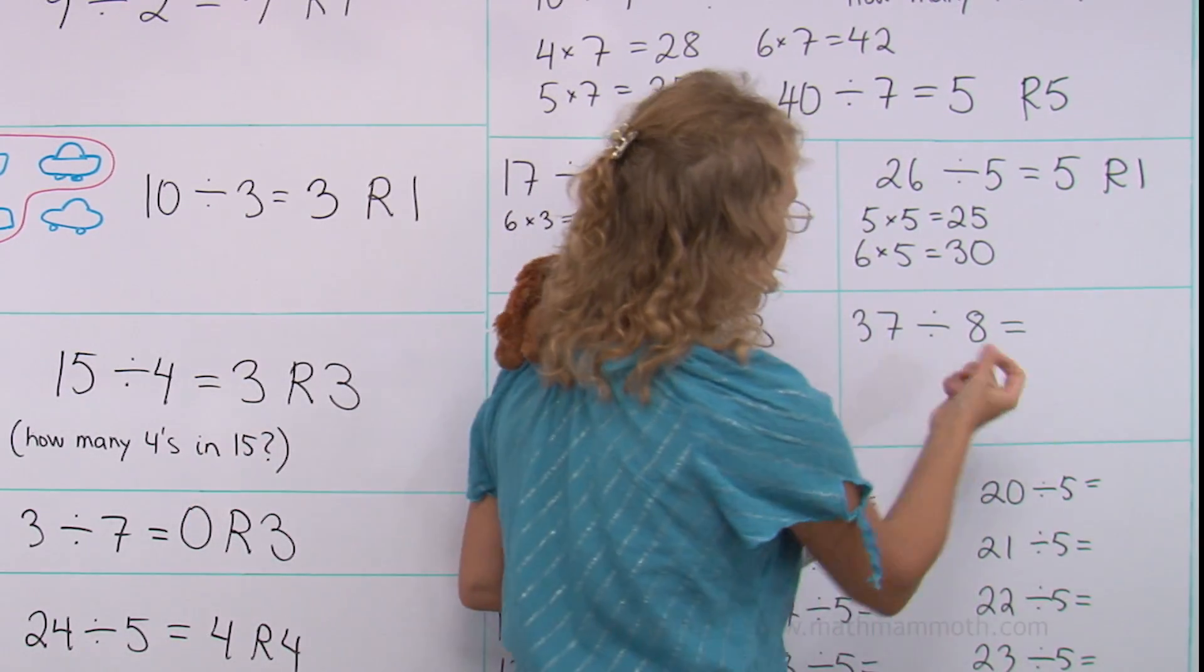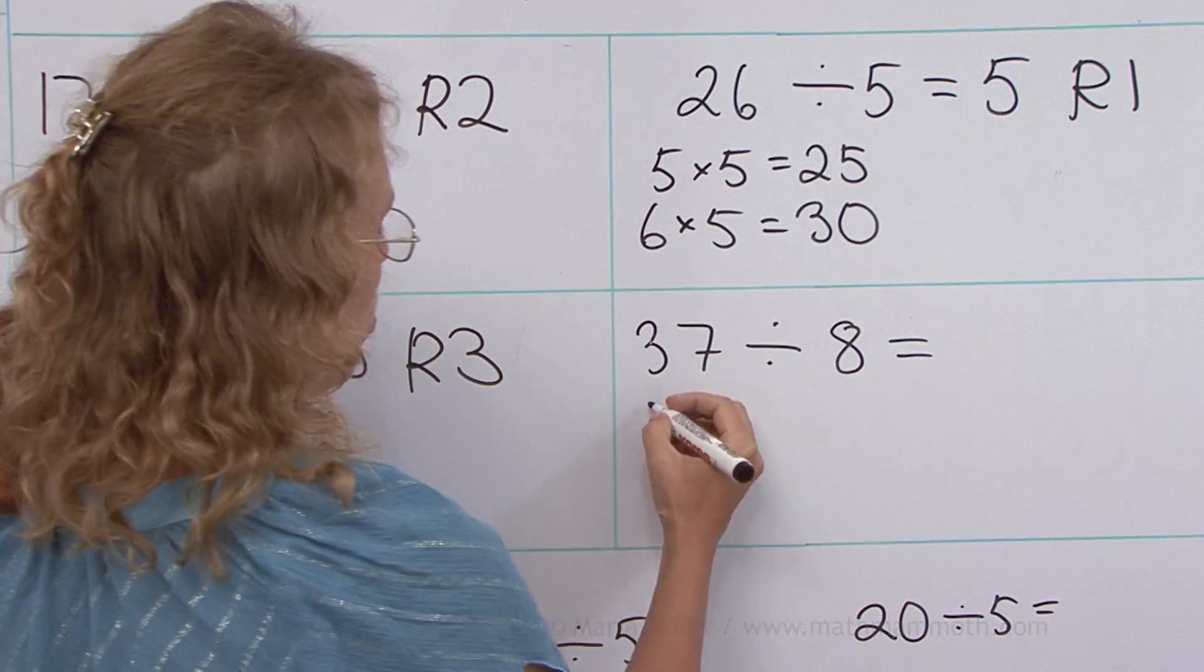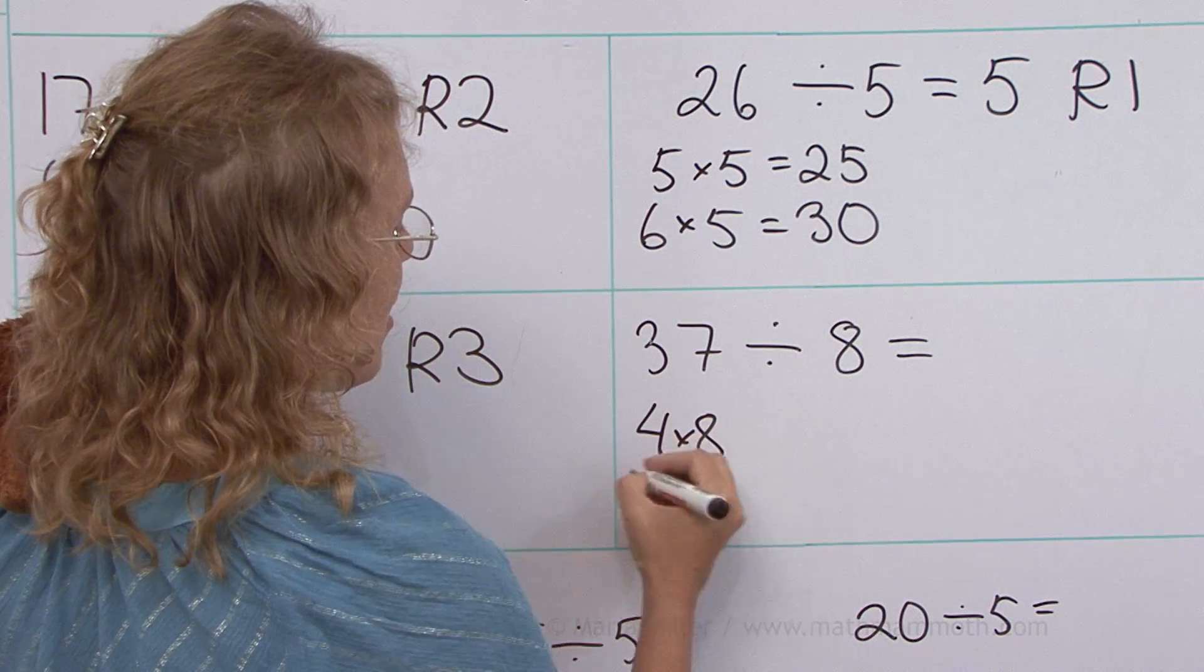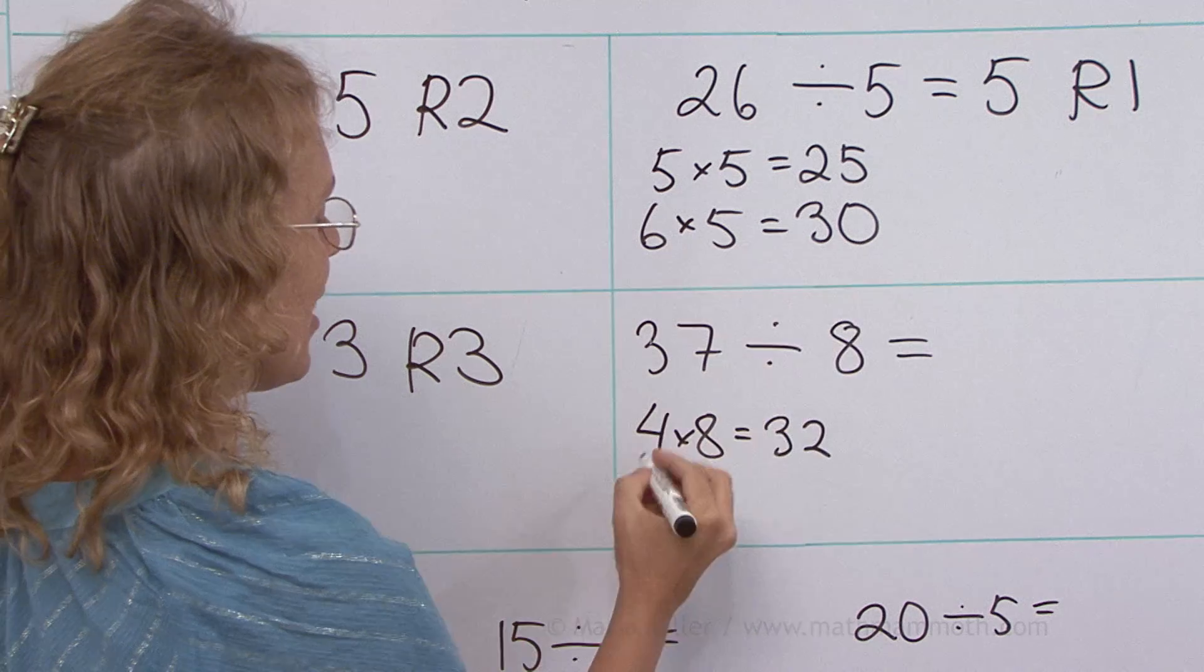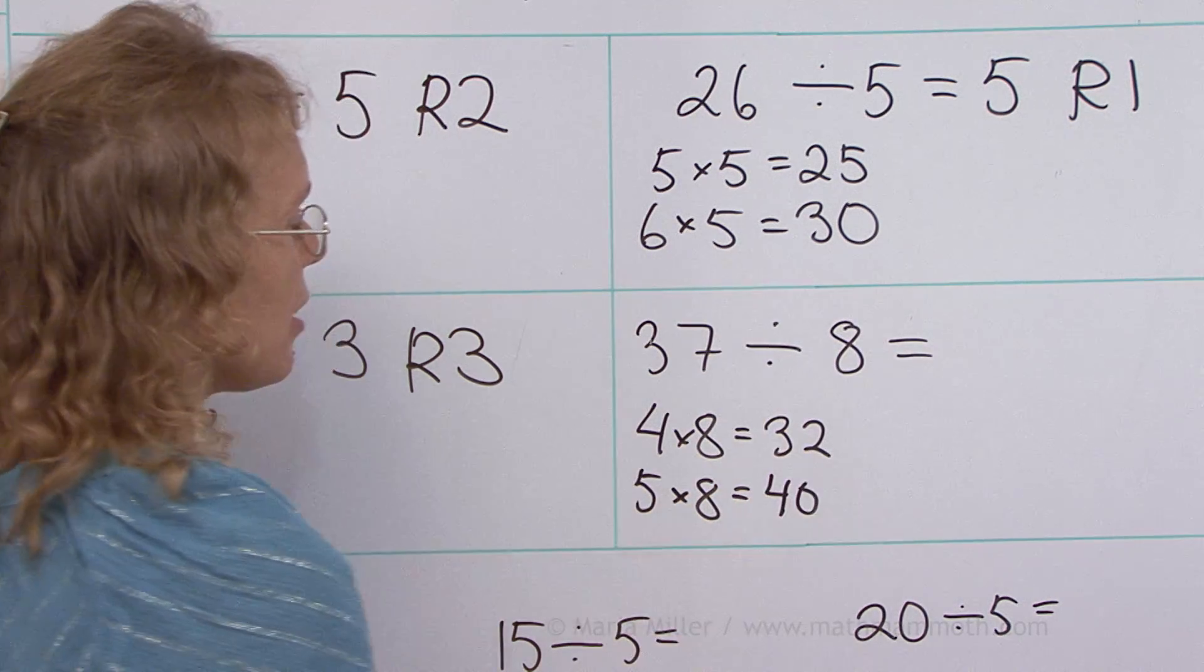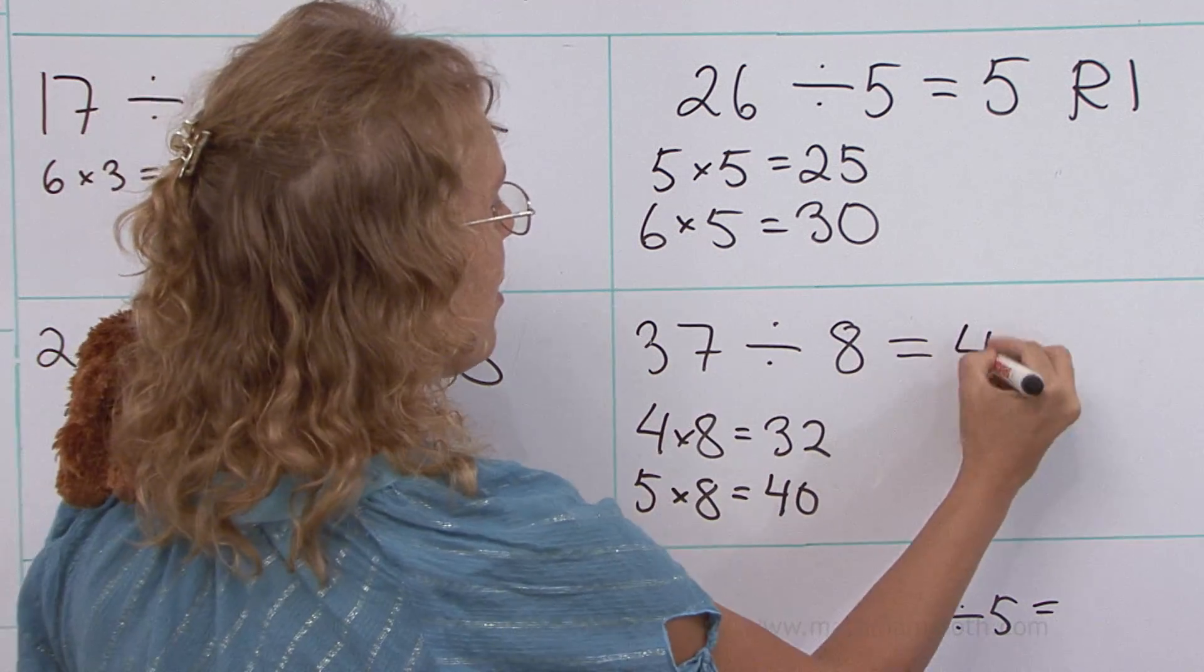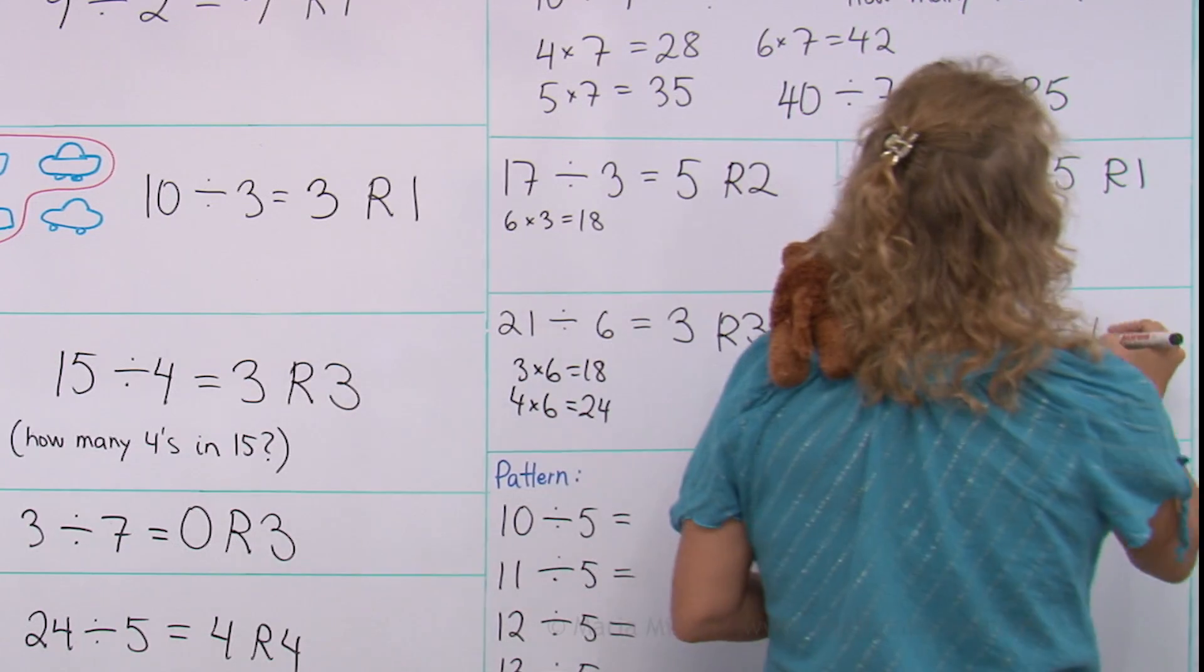Lastly, thirty-seven divided by eight. How many eights are there in thirty-seven? Four times eight, thirty-two. So it looks like four eights. Let's check five times eight, that's forty. That's too much. So there's four eights there. And then thirty-two, thirty-seven. The remainder is five.